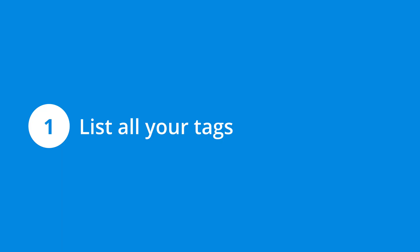Step one is to create a list of your existing tags. This should include your Google Analytics tags and any other tags you've added to your website. It's also a good idea to make a note of how the tags are added — for example, you might be using a plugin to add the Google Analytics tag.